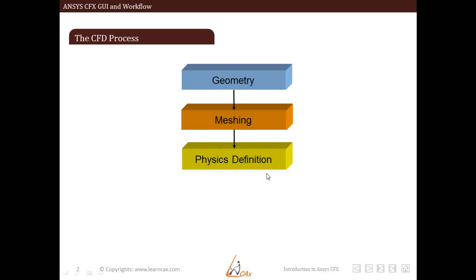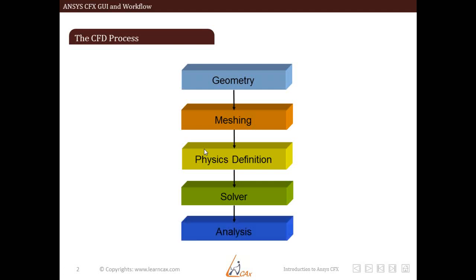After that, we define physics of that problem at various locations of that particular geometry or domain. Then we solve that particular problem in some CFD solver. In this particular case, it is ANSYS CFX. And then we analyze the results that we obtained from the solver. Any CFD problem that you do or any CFD simulation that you do will basically involve all these five steps. We start with geometry, mesh, then we define the problem in terms of physics, then we solve the numerical problem, and then we analyze the results.